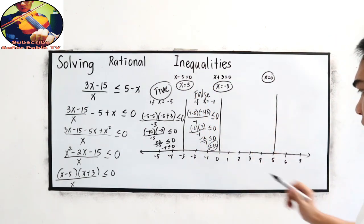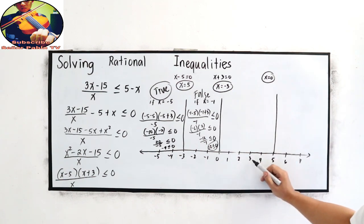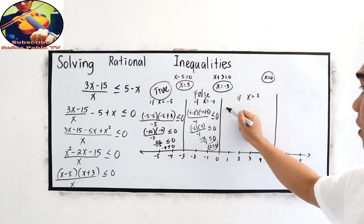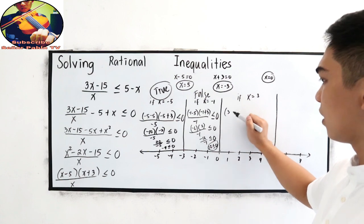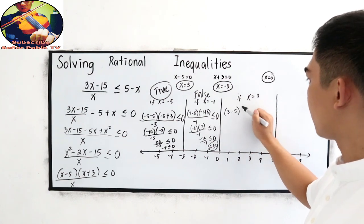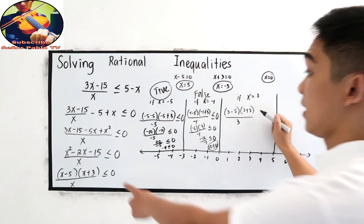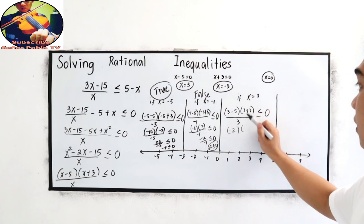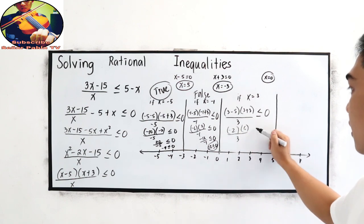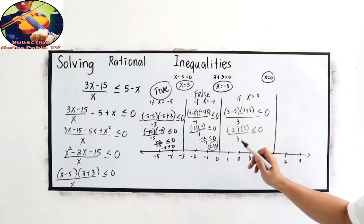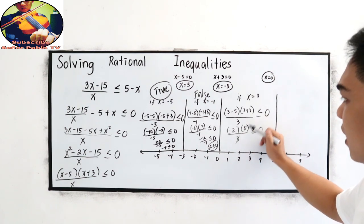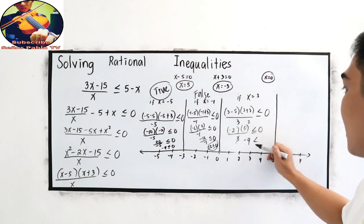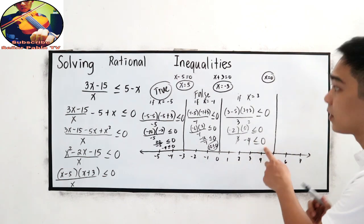Now let us test numbers between 0 and 5. We choose x equals 3. Substituting: (3 minus 5)(3 plus 3) over 3. That gives (negative 2)(6) over 3. Using cancellation, 6 divided by 3 is 2, so negative 2 times 2 equals negative 4. Is negative 4 less than or equal to zero? Yes — this is true.